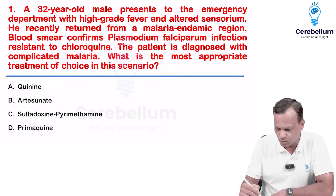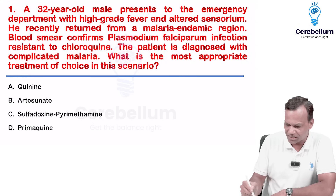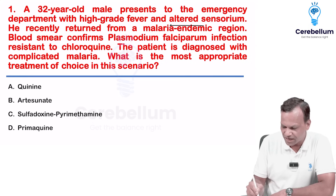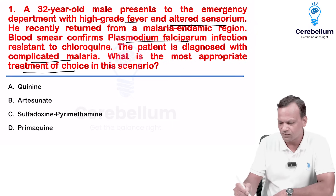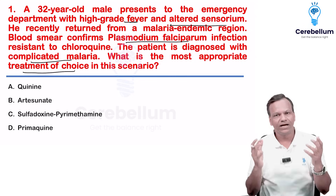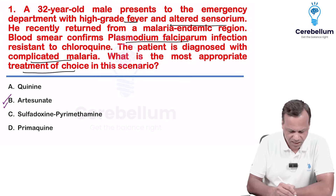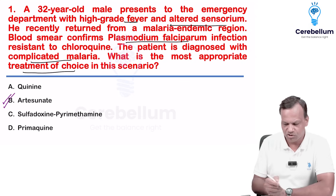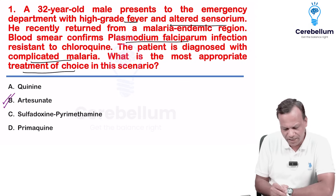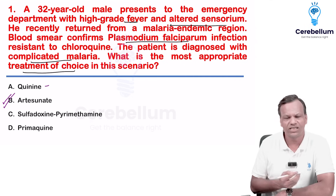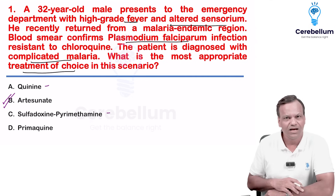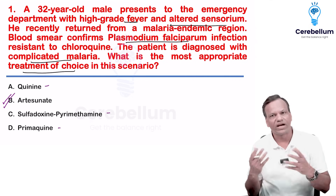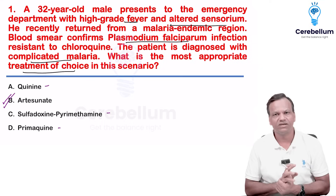This question is related to complicated malaria. A patient comes to the emergency with fever and altered sensorium — Plasmodium falciparum, so complicated malaria is present. The drug of choice is intravenous artesunate. Chloroquine is resistant; quinine can be used but is not the drug of choice. Sulfadoxine-pyrimethamine is an oral drug not indicated in complicated malaria. Primaquine is for radical cure only. So the answer is intravenous artesunate.